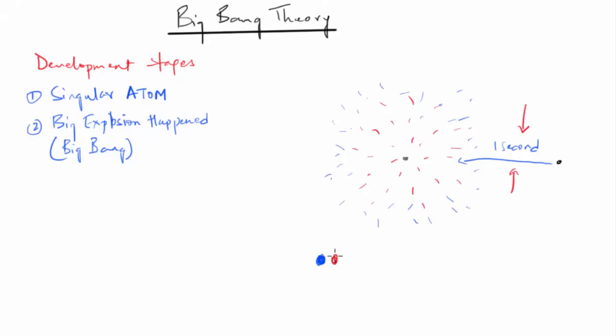Now, within the first second of the Big Bang, some energy was converted into matter and antimatter. These two opposite types of particle largely destroyed each other. But some matter survived. More stable particles called protons and neutrons started to form.